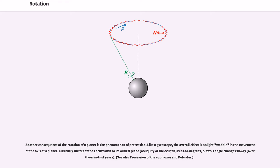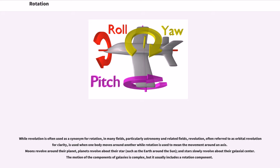While revolution is often used as a synonym for rotation, in many fields, particularly astronomy and related fields, revolution, often referred to as orbital revolution for clarity, is used when one body moves around another while rotation is used to mean the movement around an axis. Moons revolve around their planet, planets revolve about their star, and stars slowly revolve about their galactic center. The motion of the components of galaxies is complex, but it usually includes a rotation component.